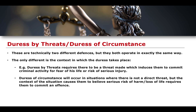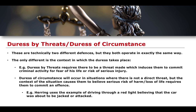Duress of circumstances, however, occurs in situations where there is not a direct threat, but the context of the situation causes the defendant to believe that a serious risk of harm or loss of life requires them to commit an offence. For example, the textbook written by Herring uses the example of driving through a red light believing the car was about to be attacked. Driving through a red light is of course a road traffic offence, but doing so under the belief that there is going to be an attack on your vehicle suggests that the circumstance has put you in a state of duress, such that you have to commit some kind of criminal activity.